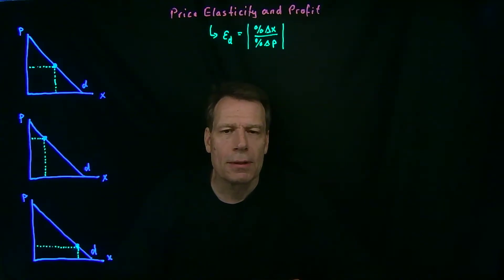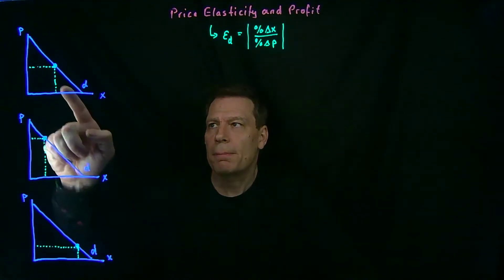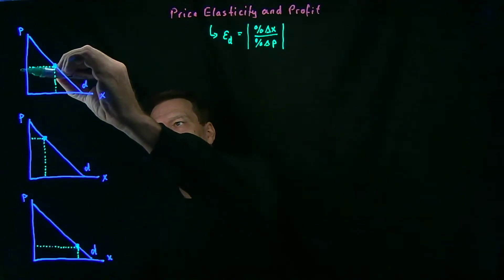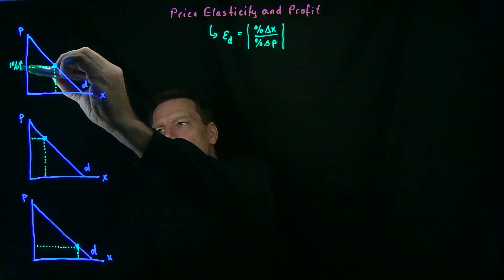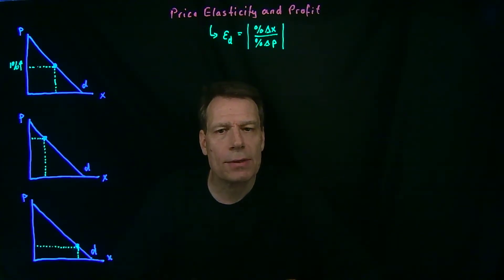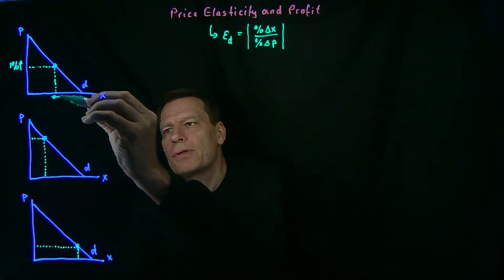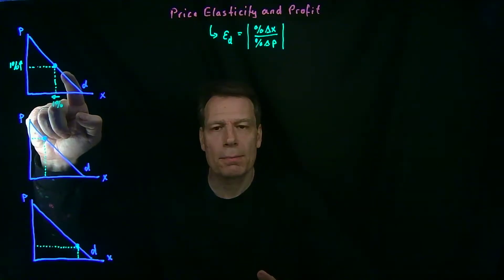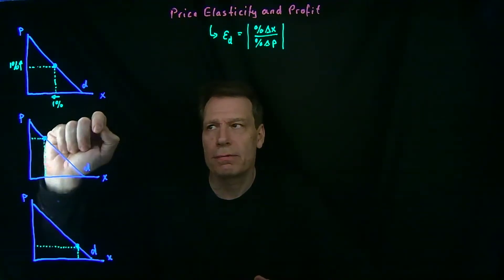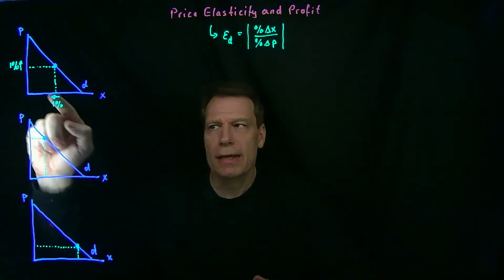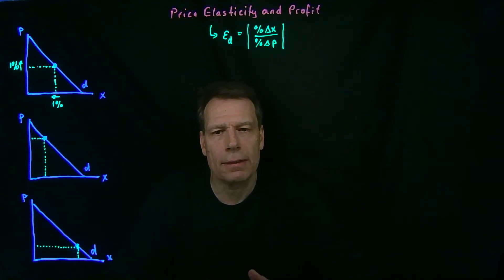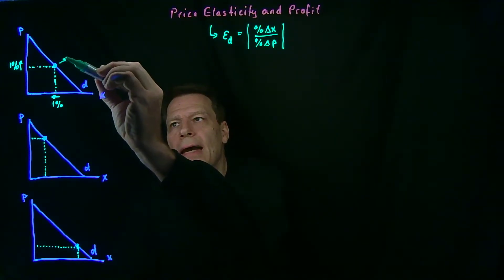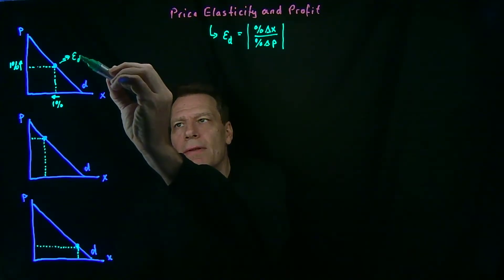Suppose you're at the midpoint of this downward sloping demand curve. Being at the midpoint means that the horizontal distance is exactly equal to the vertical distance. So if we get a 1% increase in price, we're going to see a 1% decrease in quantity. Imagine starting just below this midpoint, increasing the price by 1%, and ending up just above — that 1% increase in price leads roughly to a 1% decrease in quantity. So we'd have 1 divided by 1, which gives us an elasticity of demand equal to 1 at that midpoint.